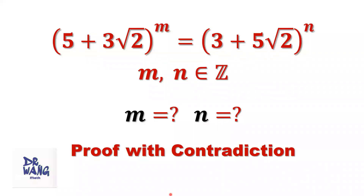Hello, everyone. I'm Dr. Wen. Here is the question. If (5 + 3√2)^m equals (3 + 5√2)^n, where m and n are integers, the question is: what are the values of m and n?